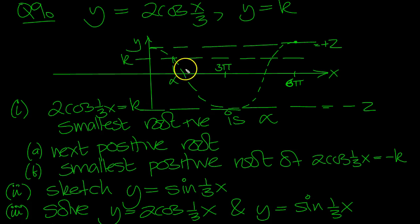When does it equal k? Here's the value of k. We're told the smallest positive root is alpha. The next positive root is over here. And by symmetry, if that's alpha, distance here is going to be alpha using the symmetry of the curve. So this value is 6π minus alpha. That would be the next positive root.